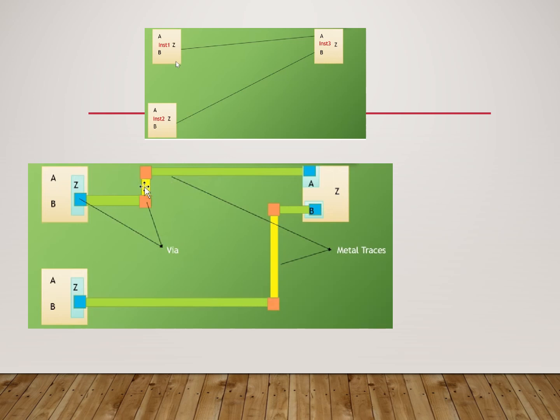If you want to make the connection between two layers, you need a via. The vertical and horizontal tracks are called metal traces. If you want to make the connection between two layers, you use a via, as shown in this figure. The yellow color line is the vertical track and the green color is called the horizontal trace or horizontal track.